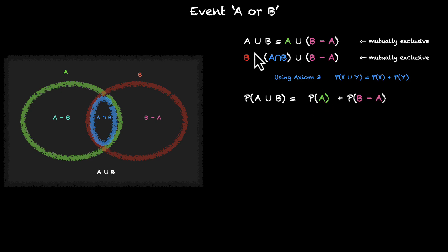We can say that probability of A union B is probability of A plus probability of B minus A. And probability of B is probability of A intersection B plus probability of B minus A. We are able to break these two down and add the probabilities only because they are mutually exclusive.